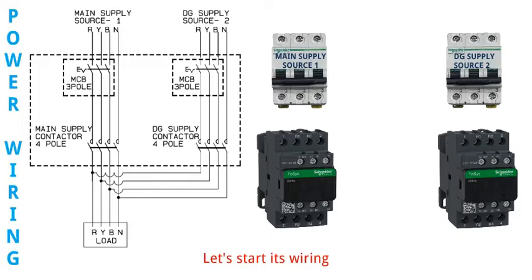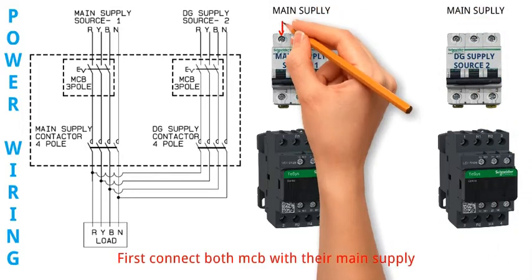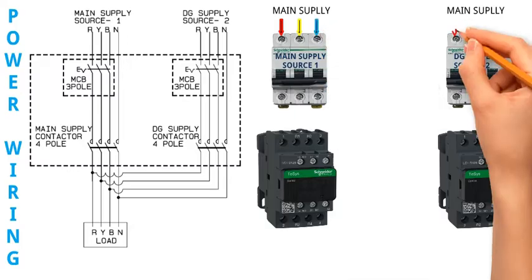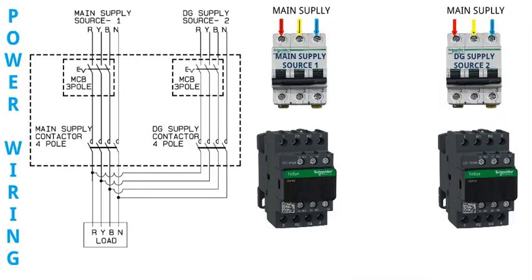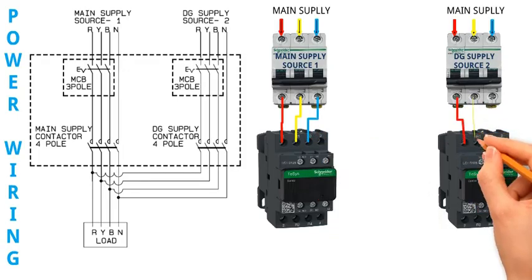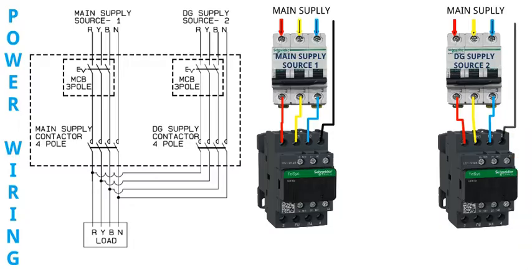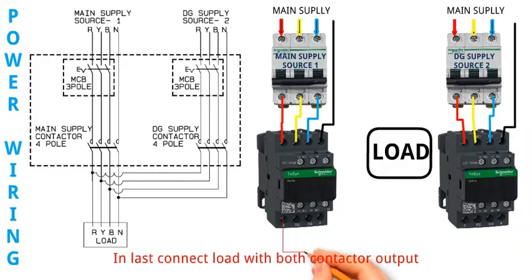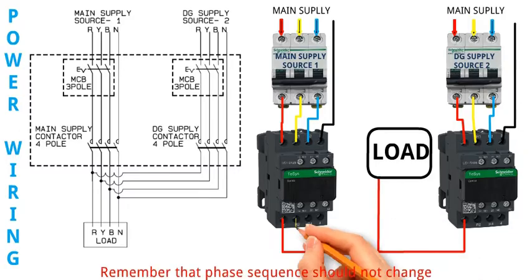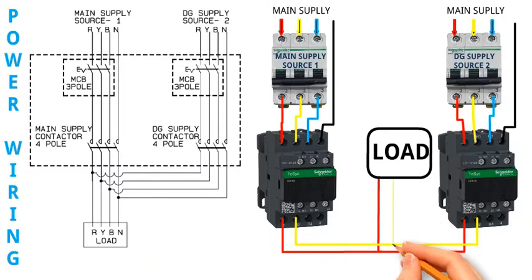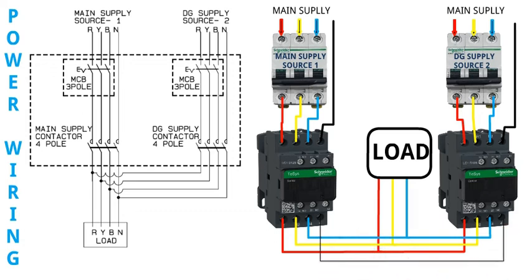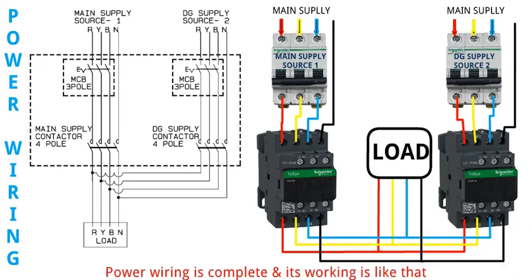Let's start its wiring. First connect both MCBs with their main supply. After that connect the MCB output with the contactor. Then connect neutral with the contactor. In last, connect the load with both contactor outputs. Remember that phase sequence should not change, and tape the connections properly.